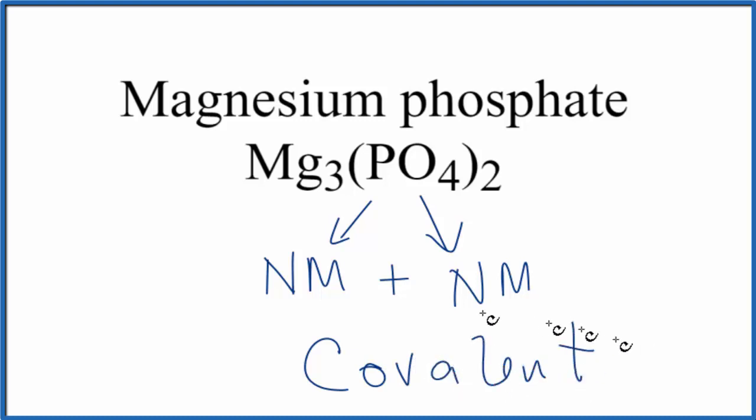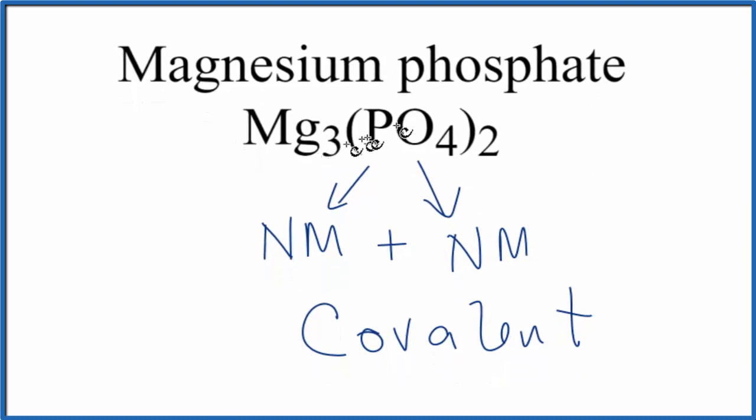So, also called molecular. While the overall compound, the magnesium phosphate overall, is an ionic compound, the bonds between the phosphorus and the oxygen in the phosphate ion, those are covalent.